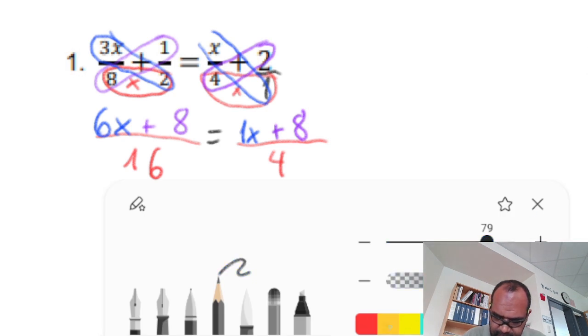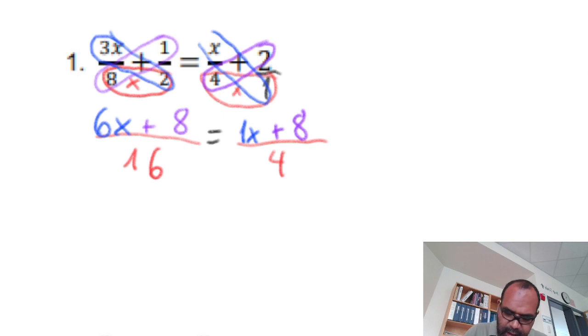Great. Let me pick another color here. Orange. Okay? What do you mean, mister? Here. 4 times 6x plus 8.